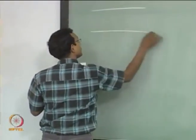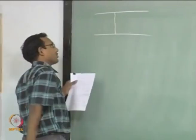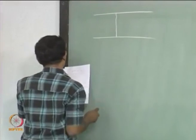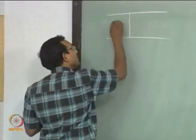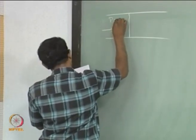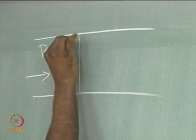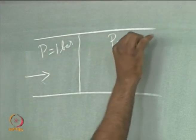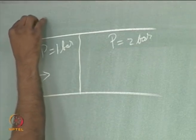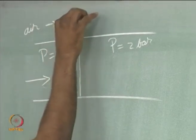So we will pick up an example. I have a shock in a straight, constant area duct, and we know that the flow goes this way. Pressure here is 1 bar and pressure here is 2 bar — that is the information I know. And the gas is air.